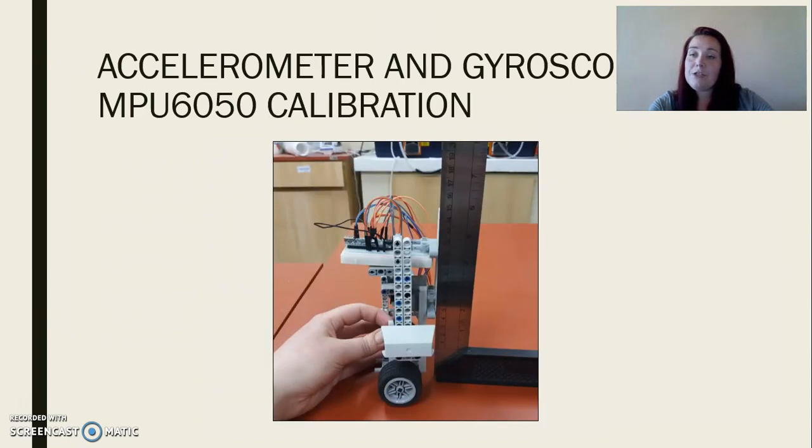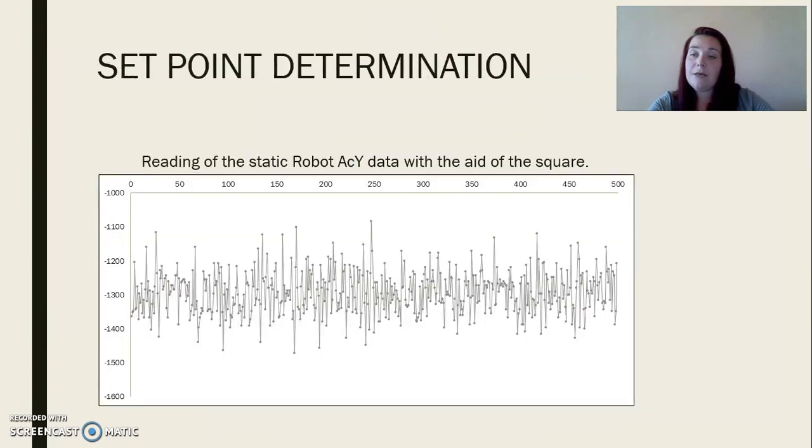For the calibration of the position sensor, only the magnitude involved in the movement of the robot was taken, which is the acceleration of the Y-axis. Keeping the robot static with the aid of a vertical stand, the readings presented in the chart were made.